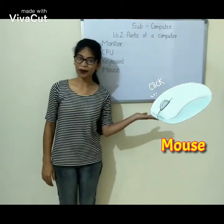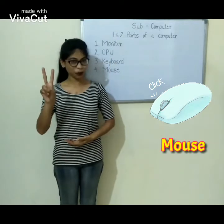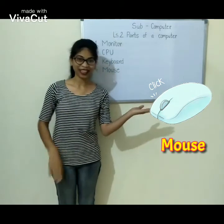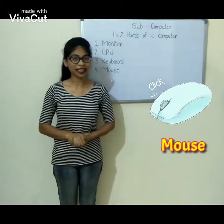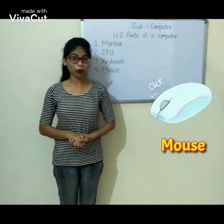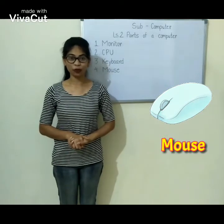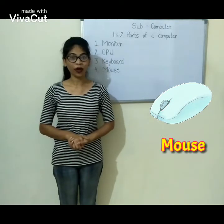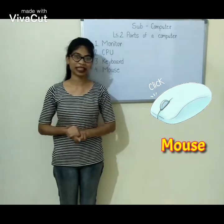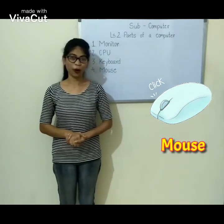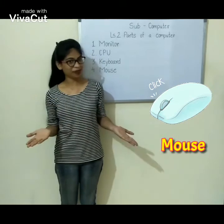This is a mouse. A mouse has two buttons — the left button and the right button. It has a scroll wheel in the center. It is used to move the pointer on the monitor screen. It is also used to draw pictures and play games.